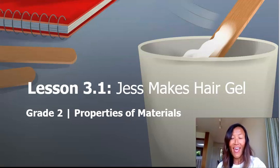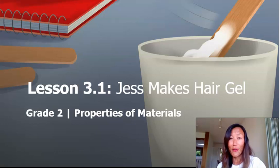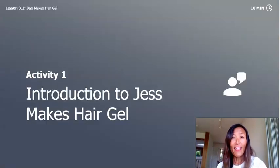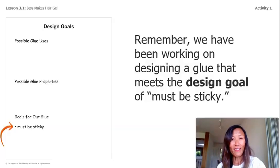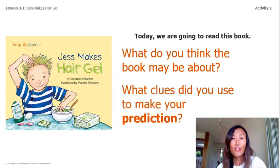Hi everyone, it's Miss Kane Crosby and today we will begin Chapter 3 in our Properties Materials unit. This lesson is titled 'Just Makes Hair Gel.' This is an exciting new chapter and today I'll read aloud another one of our books. Activity one: introduction to 'Just Makes Hair Gel.' We're going to read this book together — what do you think this book may be about?